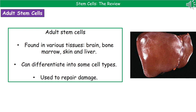The second type are the adult stem cells. These are ones you will find in your body — in things like the brain, bone marrow, skin, and liver. All of those regions have adult stem cells present. The key difference between adult stem cells and embryonic stem cells is the number of cell types they can differentiate into.